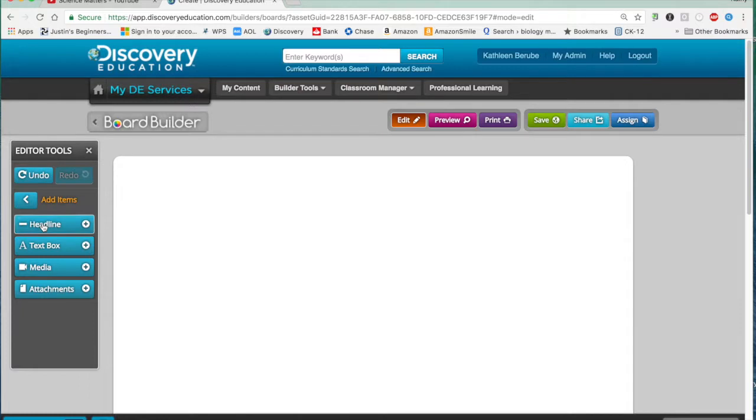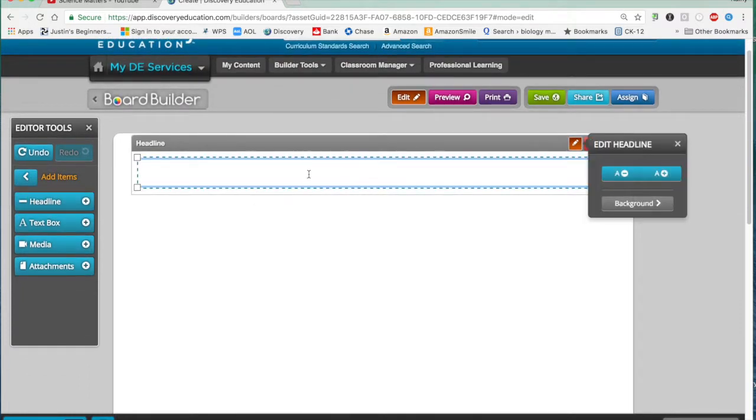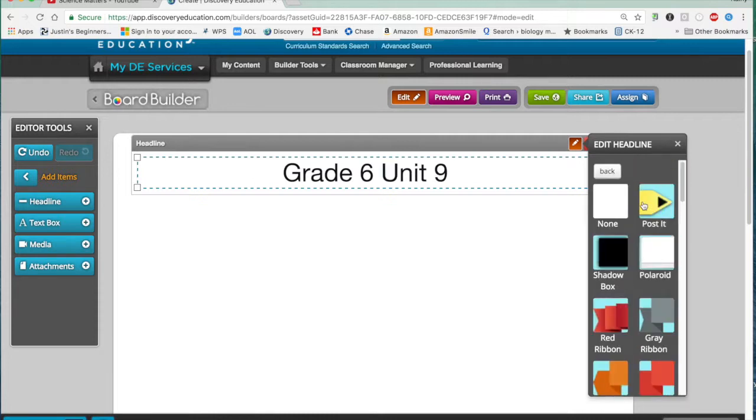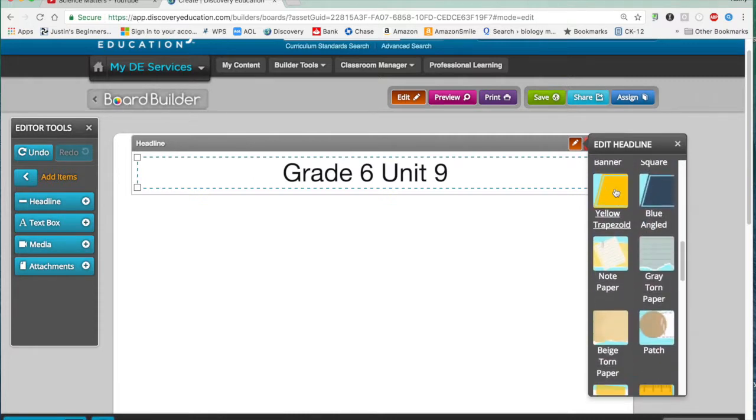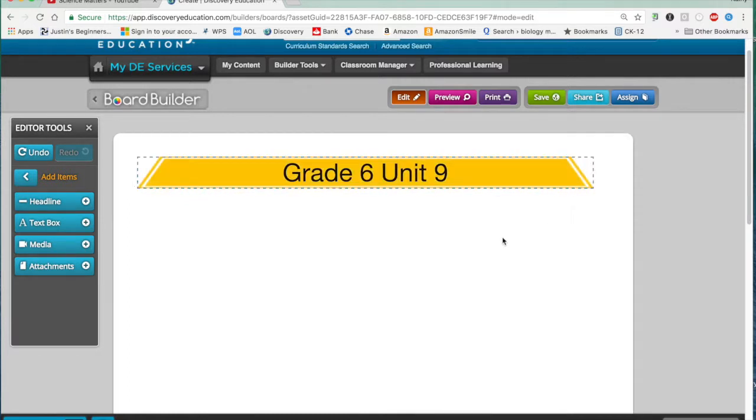So let's start with adding an item. We're going to add a headline, Grade 6 Unit 9. Now over here I can edit the size of the text by making it smaller or larger and I can add a background. This is where you get some creativity in how you're going to be able to make your individualize your board.